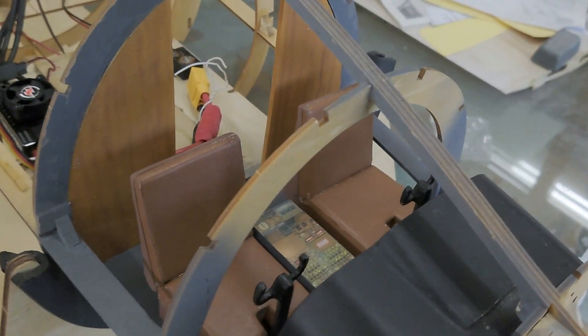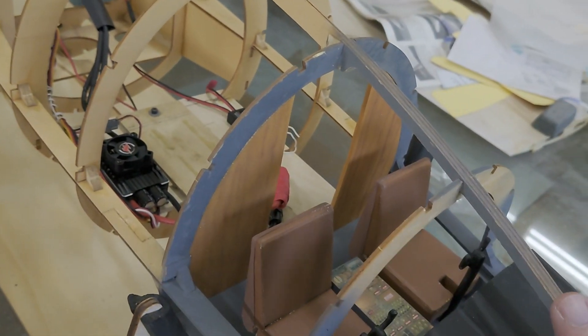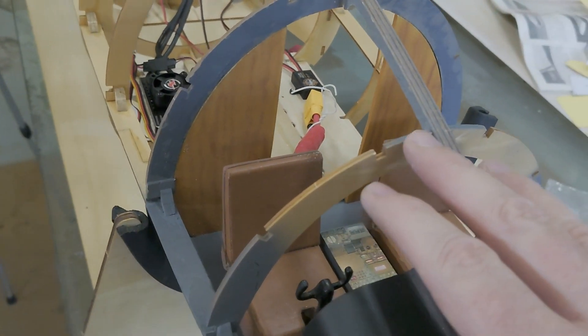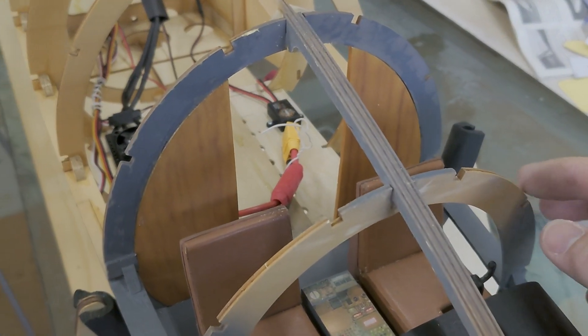These right here will get cut out, but that needs to be there for the sheeting to get the right shape, obviously. And then once the sheeting is in, the windows are cut out, and then these formers here are cut out.